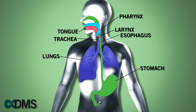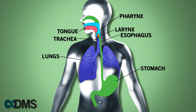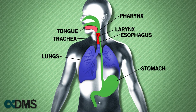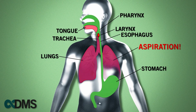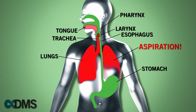If any of those three things don't happen, the food or liquid will fall through the vocal cords, into the trachea, and then into the lungs. This is called aspiration, and is how aspiration pneumonia begins.